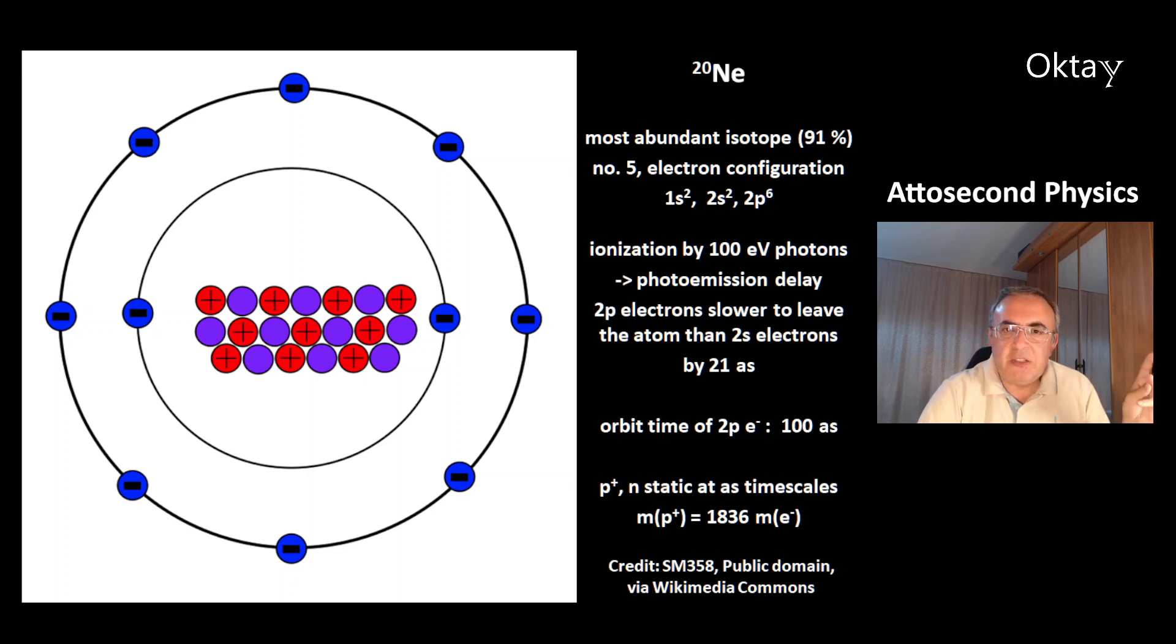The ionization of neon with 100 eV photons caused a photoemission delay. The 2p electrons were slower to leave the atom compared to the 2s electrons. The difference was 21 attoseconds. And now we also know the orbit time of a 2p electron, that's 100 attoseconds.